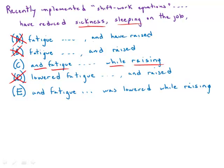It's incorrect parallelism because we have verb-object, then another object, then verb-object, verb-object — that is not parallel. So D is out. E looks promising because we have 'and fatigue,' but then we look at it: 'and fatigue was lowered' is a clause. So we have noun 'sickness,' noun 'sleeping,' and then clause 'fatigue was lowered' — that is not in parallel. So E is out. The only answer that is free of grammatical error and constructs the parallelism correctly is answer choice C, which is by far the best answer.